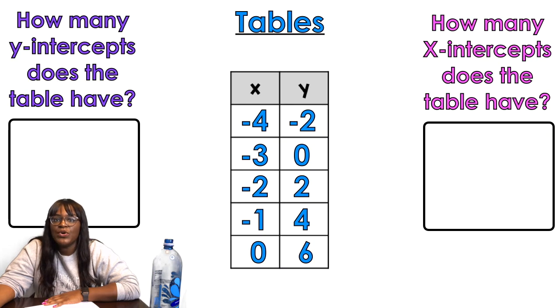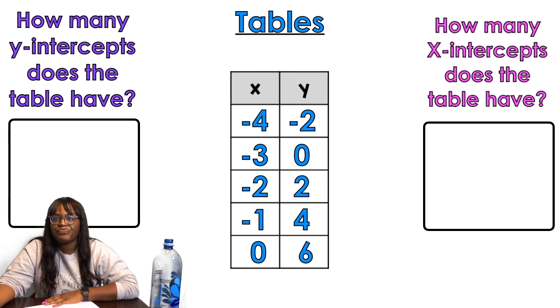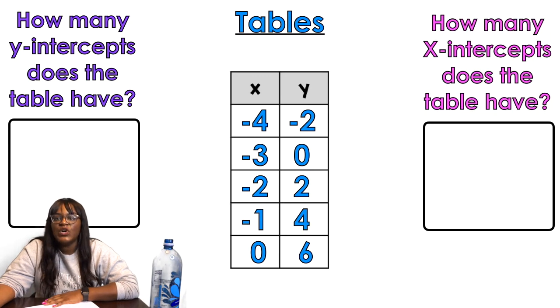All right, so when I'm looking at the tables, how many x-intercepts does the table have? Obviously, I'm looking at this table and I can notice when there's a zero in the y column, that's how I know it's an x-intercept. So I would say one, negative three comma zero. Now if I'm looking for a y-intercept, I look for zeros in the x column. So I see zero comma six. So how many y-intercepts does the table have? The table has one y-intercept.